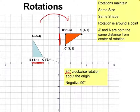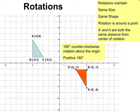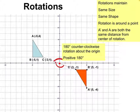We can also rotate 180 degrees. When we rotate 180 degrees, it doesn't matter if you go clockwise or counterclockwise — you'll end up in the same place. Because 180 degrees is like a straight line, it wouldn't matter which direction we went; we'd end up in the same location.